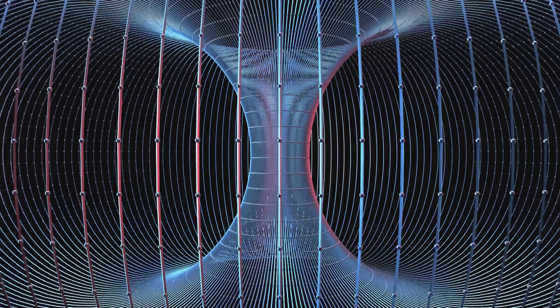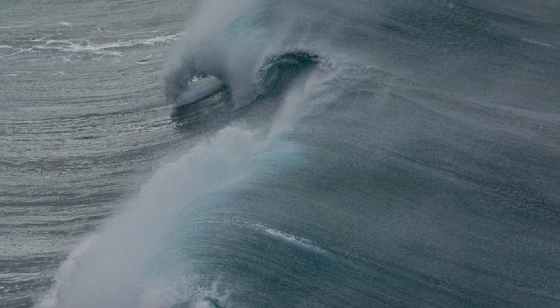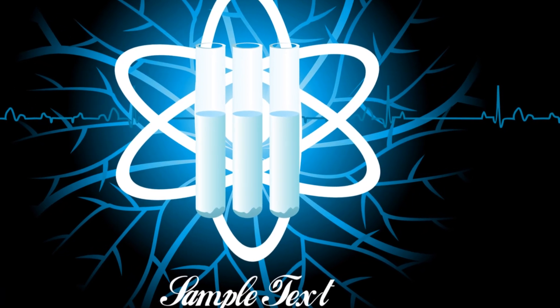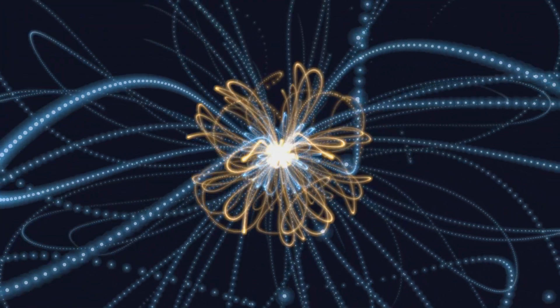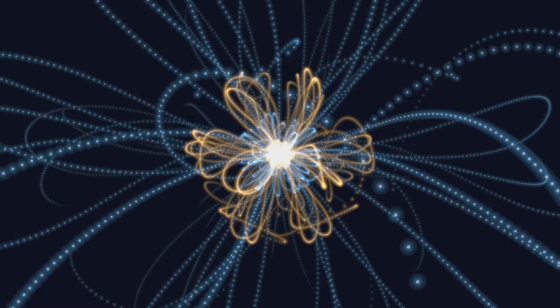Imagine a surfer riding a wave. The surfer's position is always definite, even though the wave itself is spread out. When the surfer reaches the shore, their position becomes obvious, but this doesn't mean the wave suddenly collapsed. Similarly, in pilot wave theory, the particle always has a definite position, guided by the pilot wave. Our measurement merely reveals this pre-existing position, rather than causing it to materialize out of a cloud of possibilities.